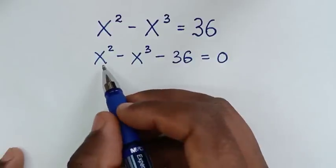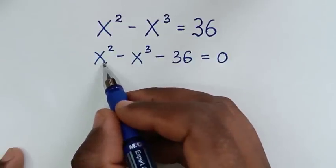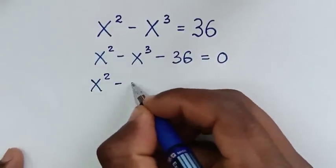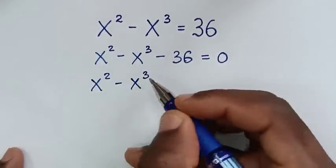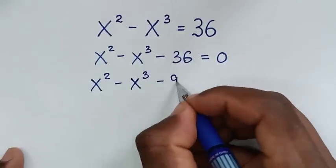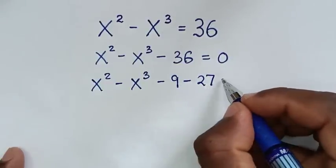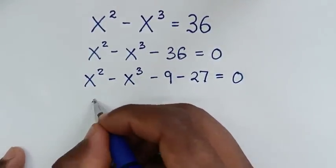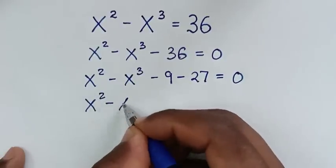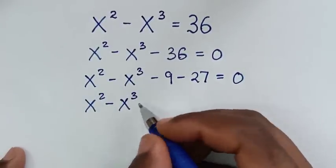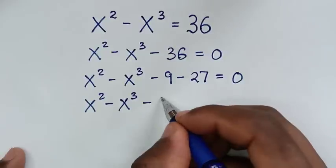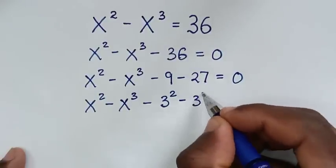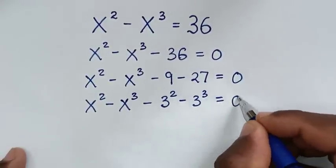In the next step we will split this negative 36 according to the corresponding exponents of x squared and x cubed. So it will be x squared minus x cubed, then minus 36 is the same as minus 9 minus 27, which is minus 3 squared minus 3 cubed, is equal to 0.